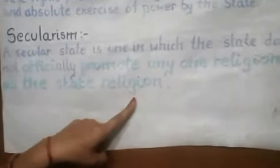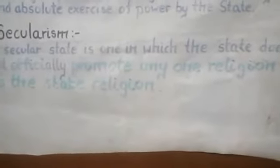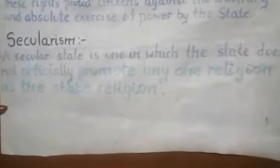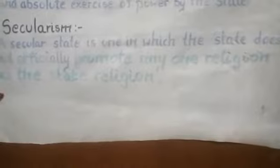Let's understand this with two examples. The constitution of Pakistan declares it an Islamic nation, and Nepal is a Hindu nation. In our country, we have not written anything like that anywhere, because we have not promoted any single religion. All religions are equally treated.